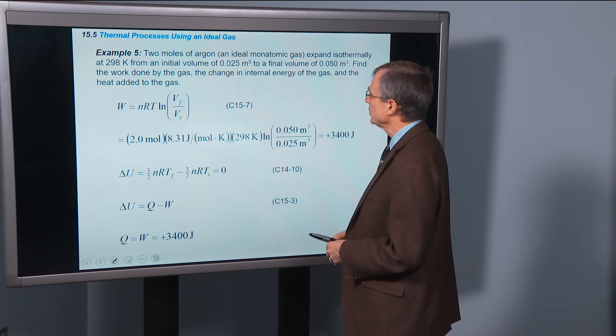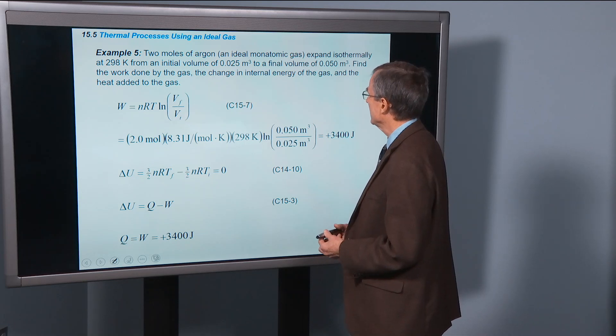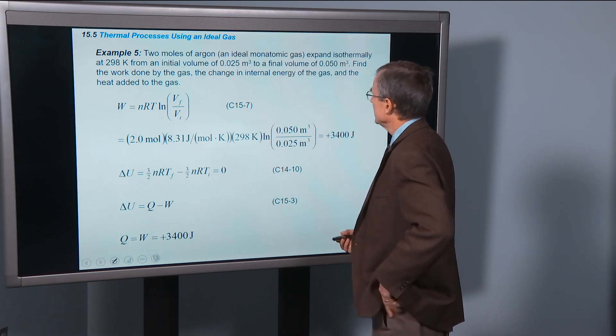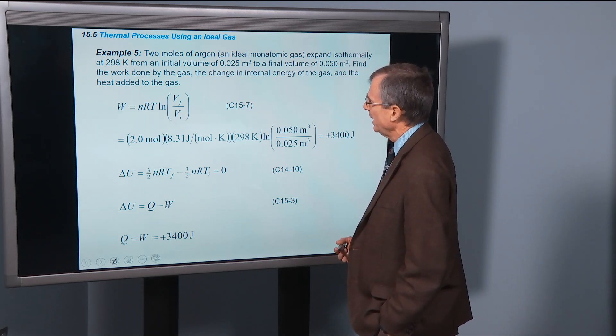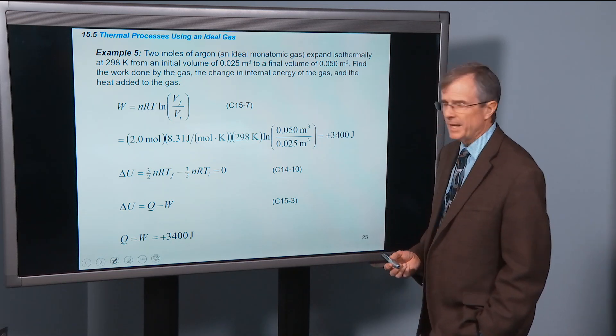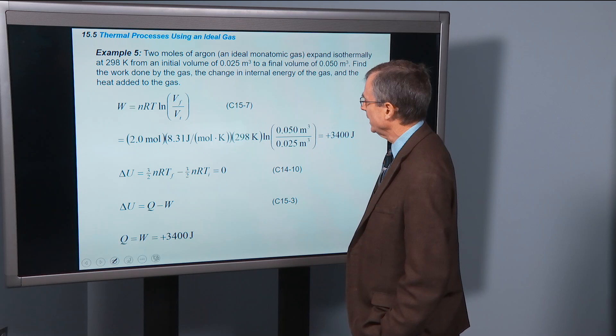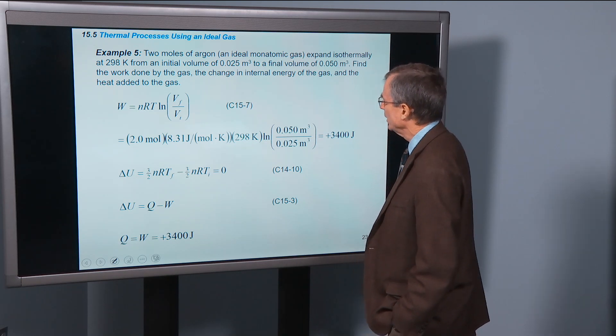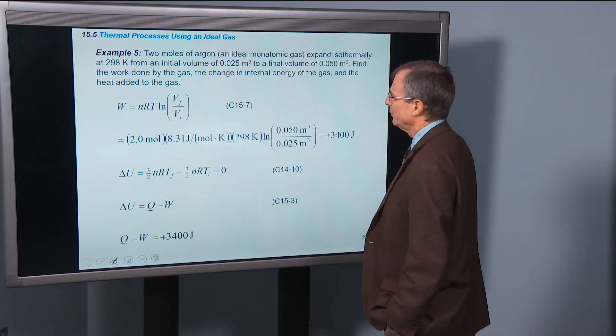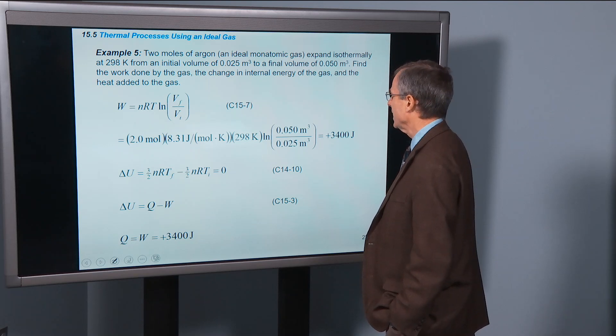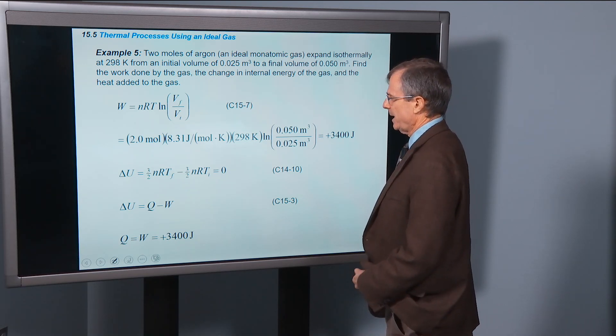All right, do an example. Two moles of argon, that's an ideal monatomic gas. Expand isothermally at 298 K. So the temperature's not changing. It stays at 298 K. From an initial volume to a final volume. Find the work done by the gas, the change in the internal energy, and the heat added.